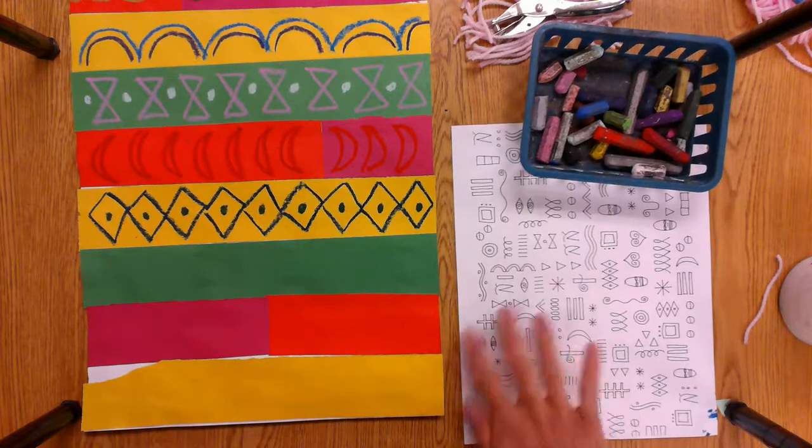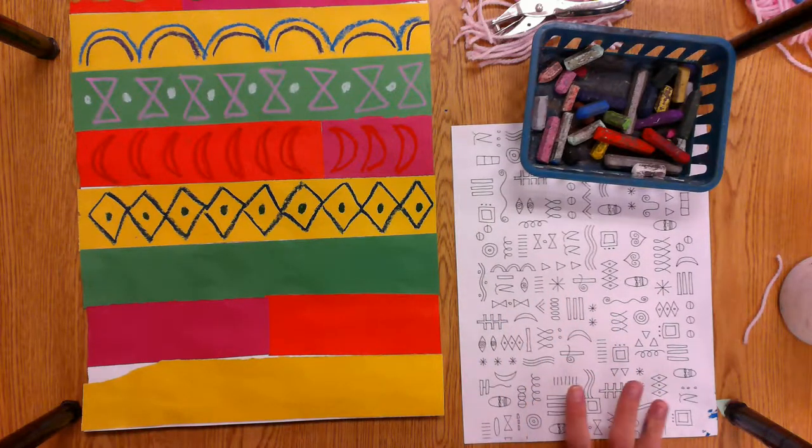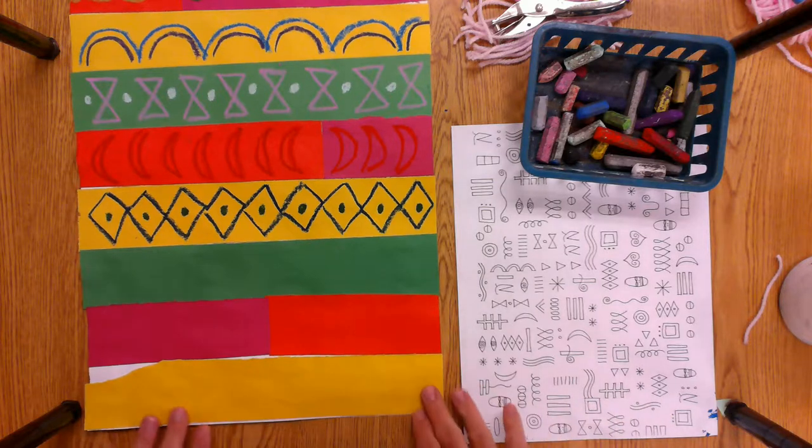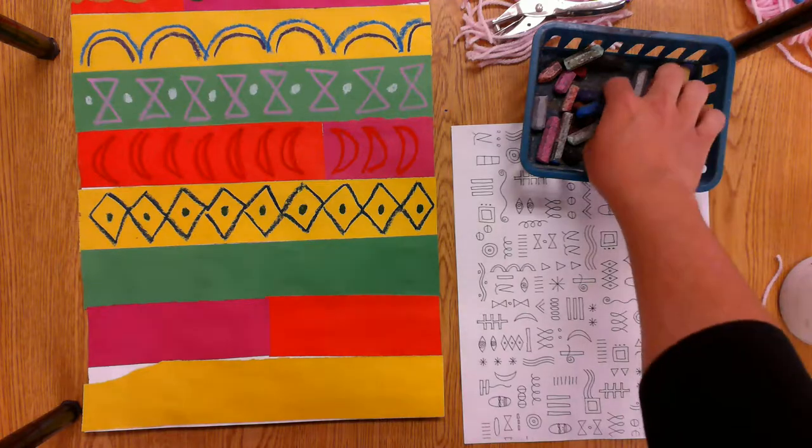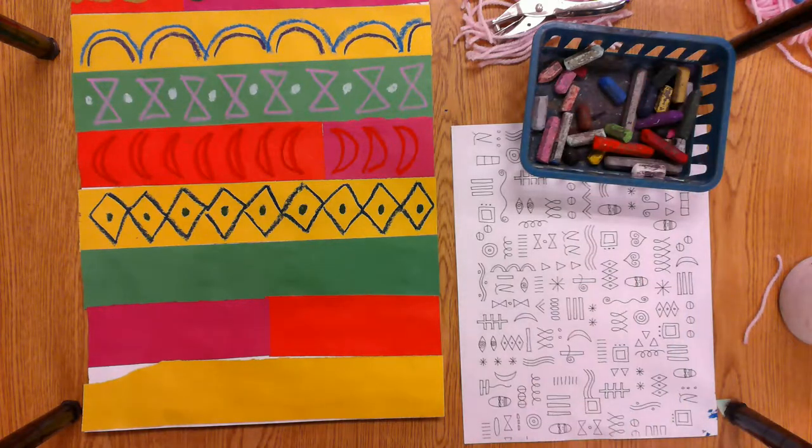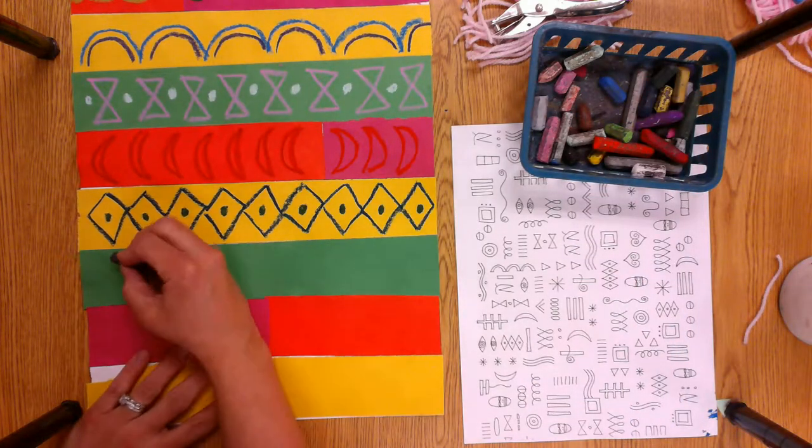So on this paper here, there are some examples of different lines and patterns and shapes that you can repeat. I've already started adding some to mine. I'm just going to show you the last three stripes, and then I'll show you how to do the fringe.